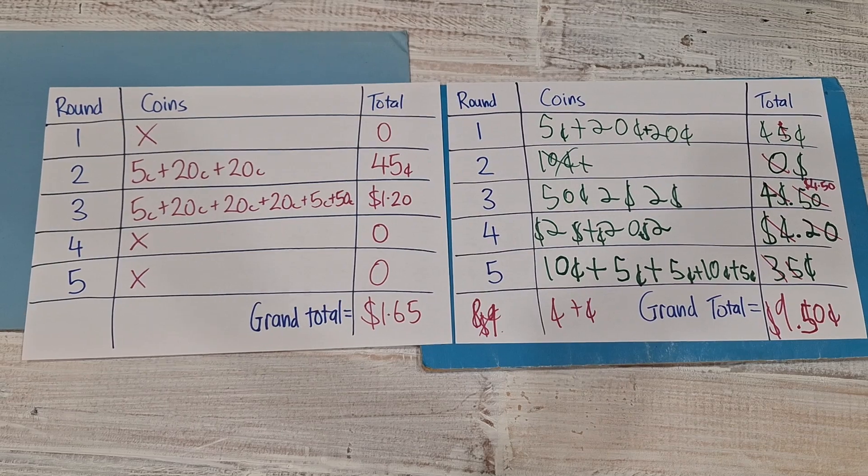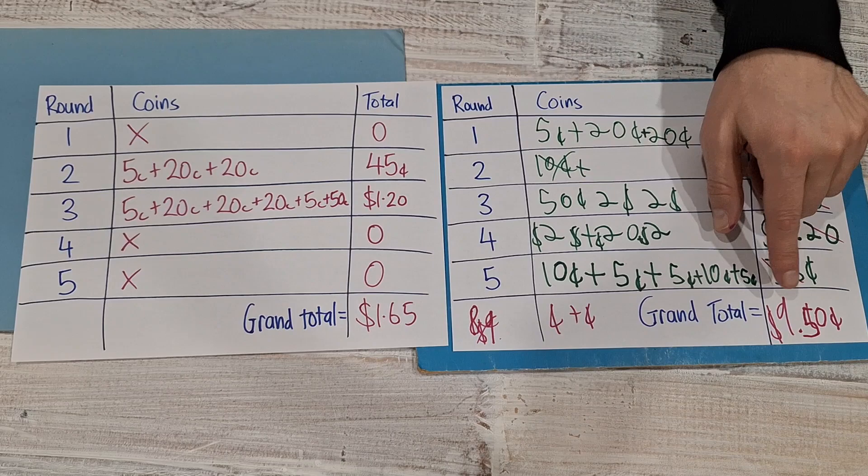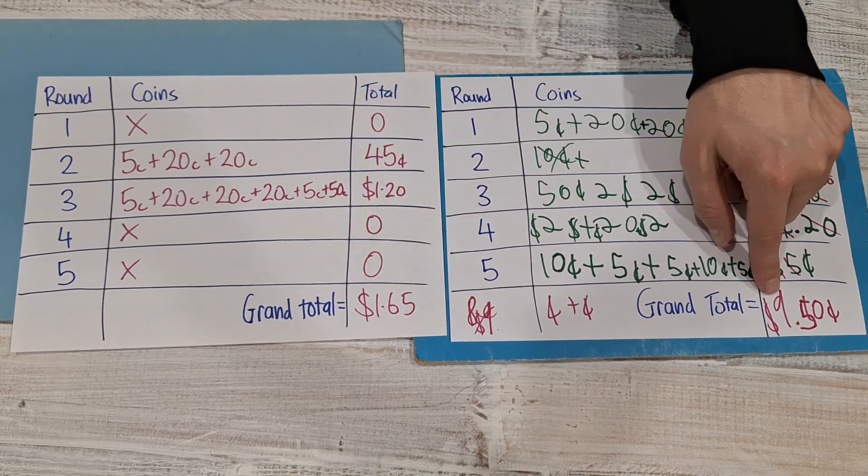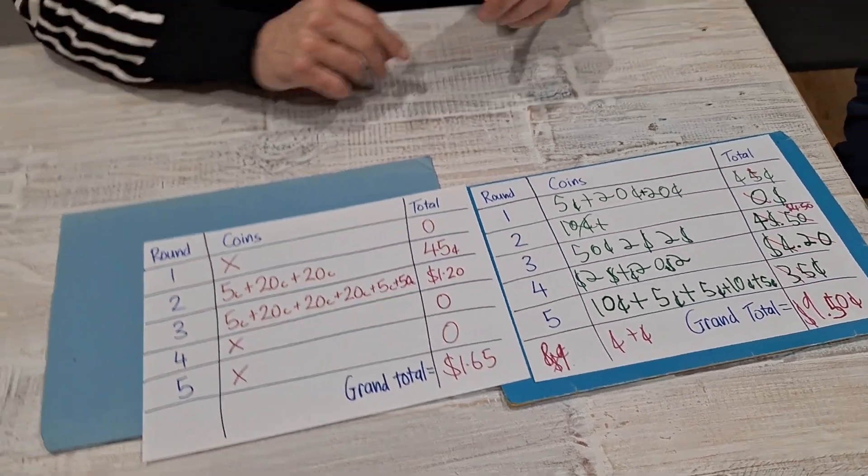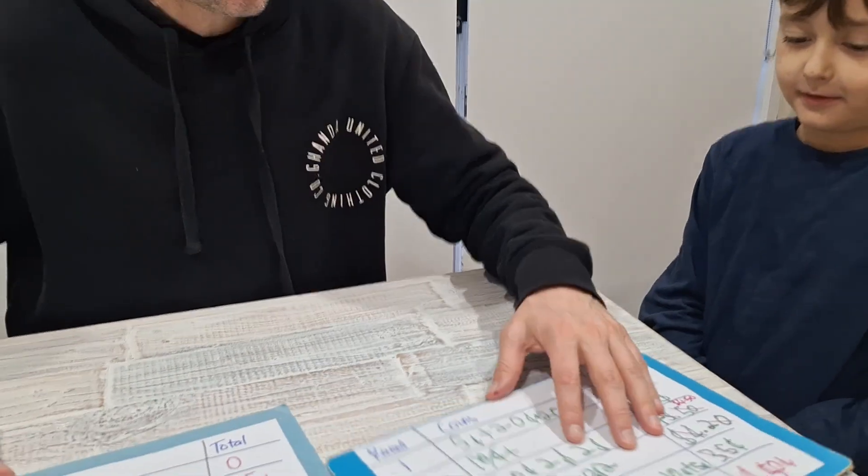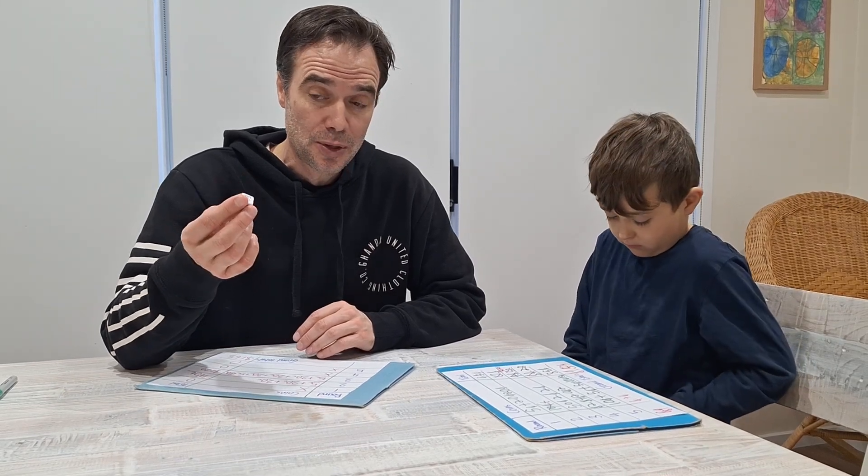Okay, now, amazingly, Isaiah only got one one dollar coin for the whole game. So, as you can see, I had a dollar sixty-five. Isaiah? Nine dollars and fifty cents. So, Isaiah wins quite convincingly. And then we could get a new game board and we could play again. You can also change around, like, which amount is the amount that makes you go bankrupt, which does change the strategy of the game a little bit.